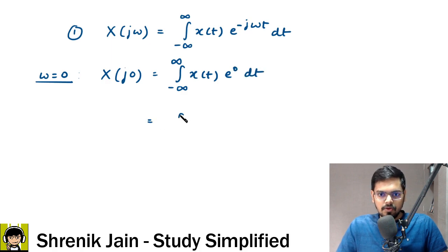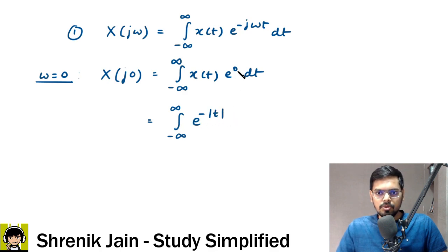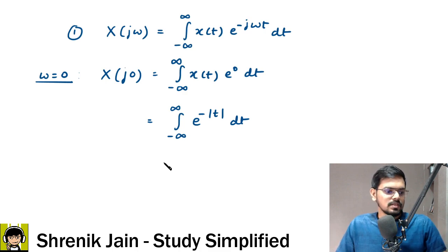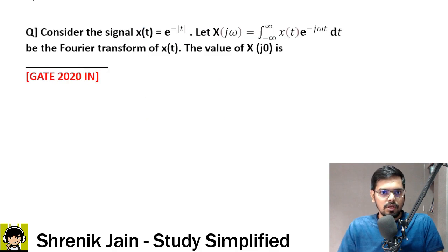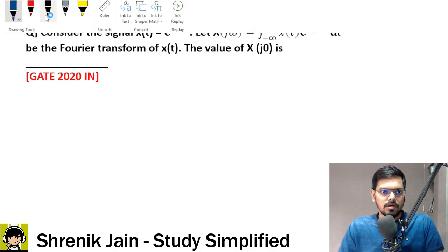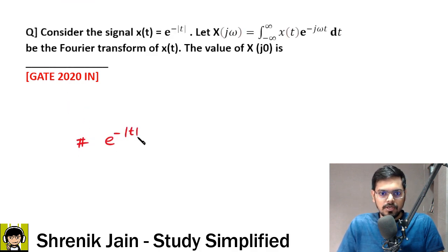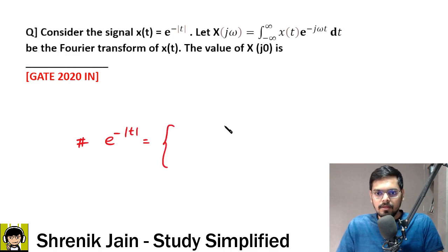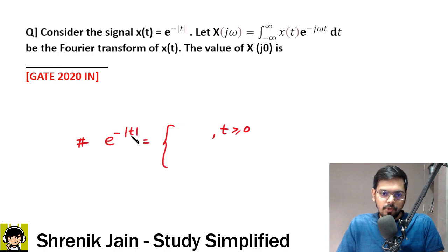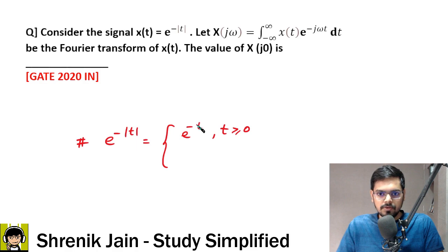x(t) given in the question is e to the power minus mod t, and e to the power 0 is 1. Now, you should know the concept of e to the power minus mod t. On the positive side, mod t remains positive t, so e to the power minus mod t becomes e to the power minus t.